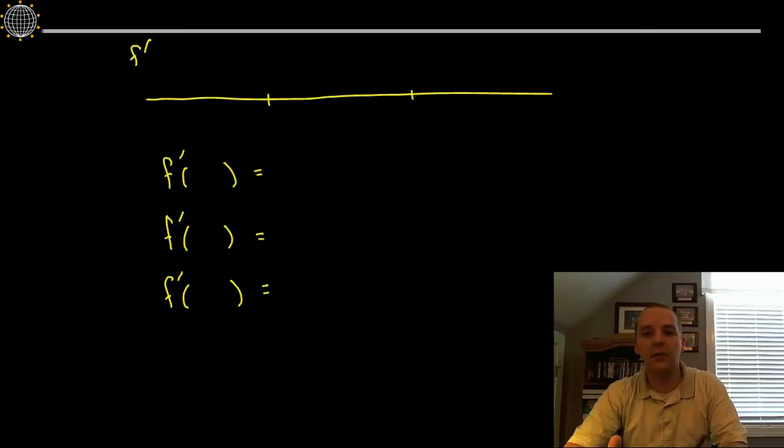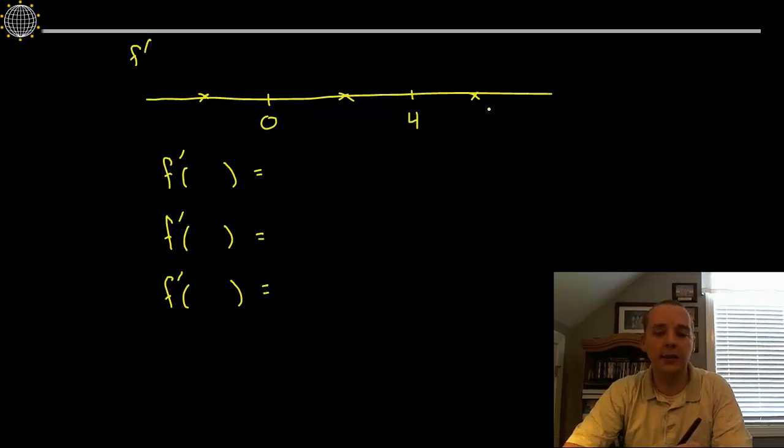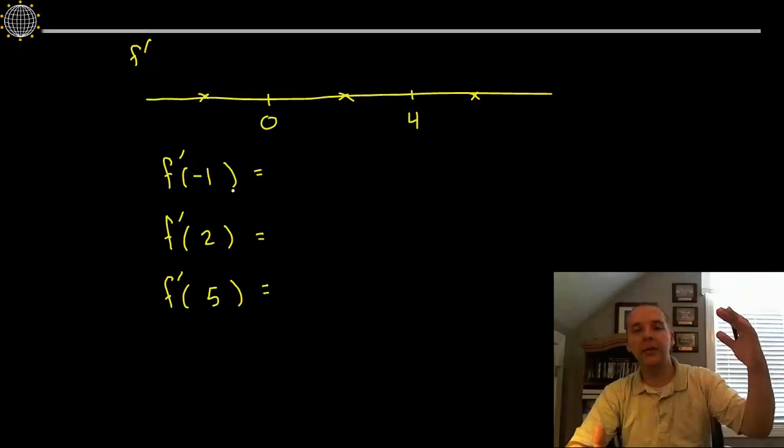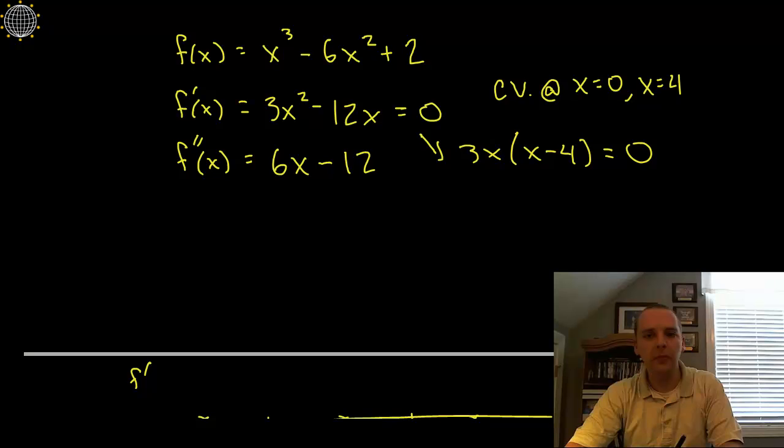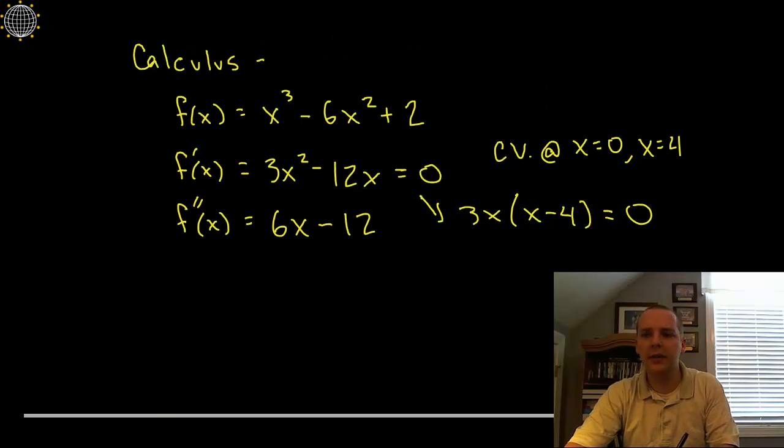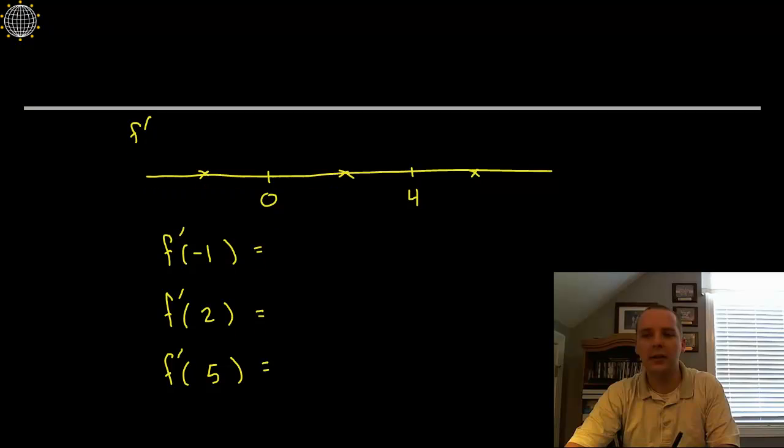So what do we do from here? Well if you'll recall once you have your critical values you typically put them on a number line and then you pick test points before and after each one. So we'll pick a point before 0, how about negative 1, between 0 and 4, how about 2, and after 4 maybe 5. And we're going to see what is the sign of the derivative. This will indicate if the function is increasing with a positive slope or decreasing with a negative slope.